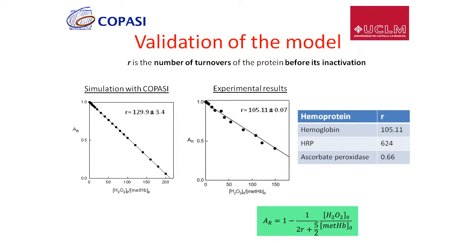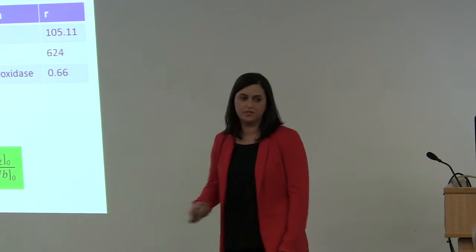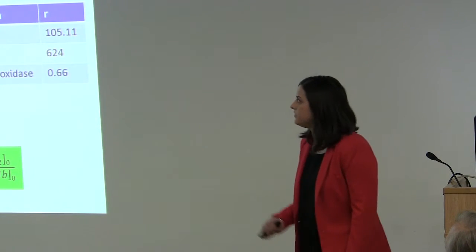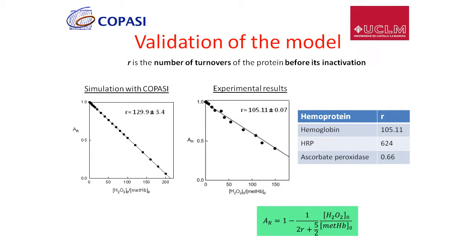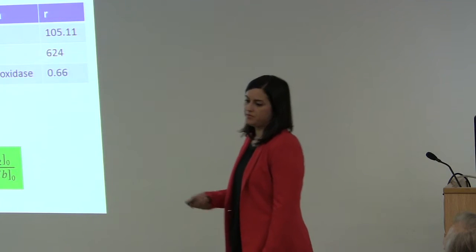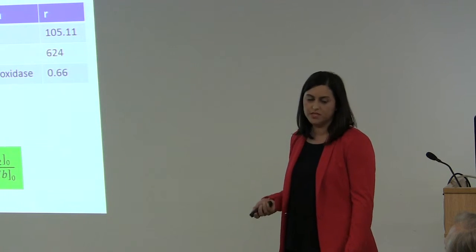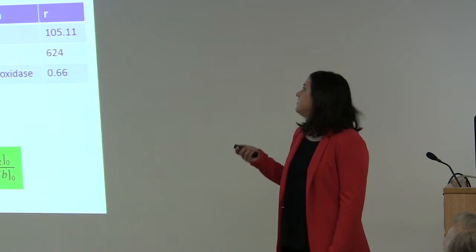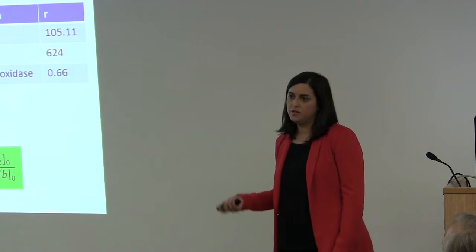Finally, we used this model to calculate the parameter R, which is a kinetic parameter that describes the inactivation of the protein and is defined as the number of turnovers of the protein before its inactivation. We calculated it both by simulation and experimentally and obtained similar results. Importantly, this was calculated for hemoglobin but we can extend this calculation to other hemoproteins such as horseradish peroxidase and ascorbate peroxidase. These results demonstrate the goodness of the model proposed to describe the behavior of hemoproteins.